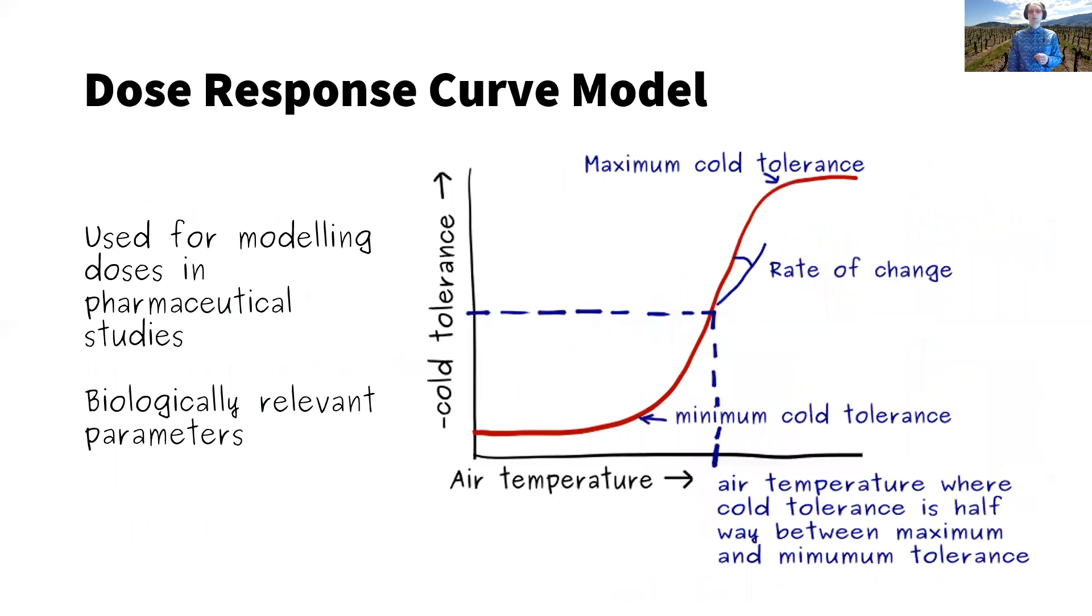And to do this, we're using a dose response curve model. And this model, or type of model, is initially developed for assessing medicines or toxicity in pharmaceutical studies. But they're also potentially useful for cold tolerance and other physiological tolerances. They have four biologically relevant parameters. In this case, the maximum and minimum cold tolerance, the rate of change of cold tolerance as air temperature changes, and an inflection point for the sigmoidal curve.